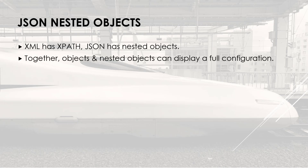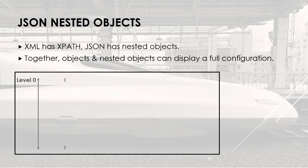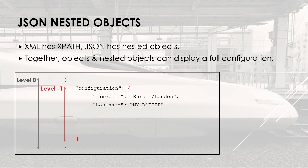Together, objects and nested objects can display the full configuration of a network equipment. I'm opening a curly bracket to store my first object at level 0. The key of my object is configuration, but instead of specifying a value after the colon, I'm creating a new JSON structure at level 1, in which I will store different keys and values, like timezone, hostname, and NTP. At the NTP stage, I'm again creating a new structure at level 2, with its own key — the server — and values, the NTP server IP addresses.